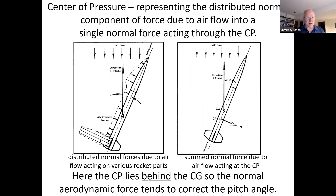The deviation between how you're pointing and how you're traveling is referred to as pitch angle. I'm trying to fix the pitch angle if it gets off of zero — the goal is the rocket looking straight up as it's moving straight up.